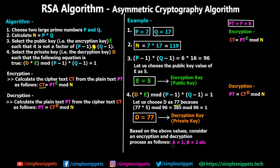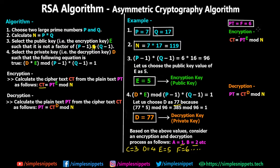We consider every alphabet as a number: A=1, B=2, C=3, D=4, E=5, F=6, and so on. Since mathematical calculations are required, we convert alphabets to numeric values. Let's say we want to send the letter F as the plaintext. F corresponds to 6, so our plaintext PT = 6. For simplicity we use only one alphabet, just to demonstrate that encryption and decryption returns the same plaintext.